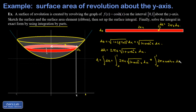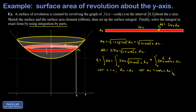This is a classic integration by parts situation. We have the simple function x that will get simpler if differentiated, so let u = x. We also have cosh(x), which is easy to integrate, so let dv = cosh(x) dx. We'll move the 2π out of the integral as we apply integration by parts.